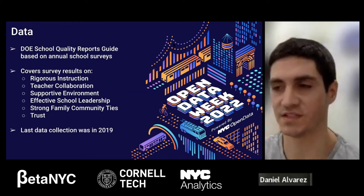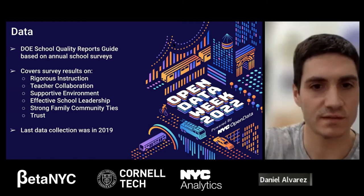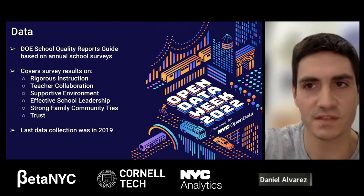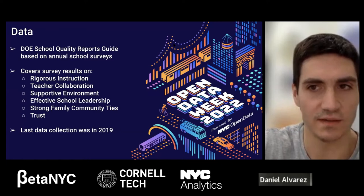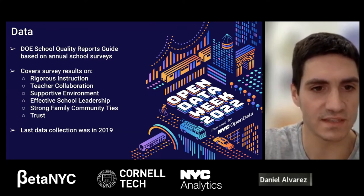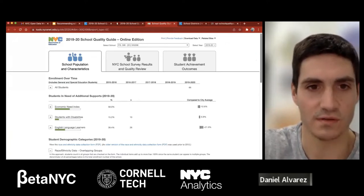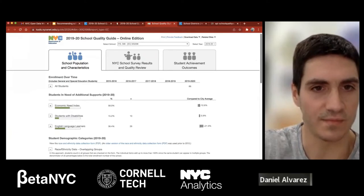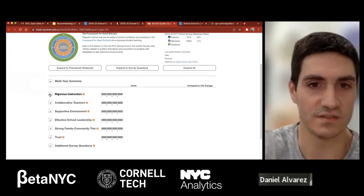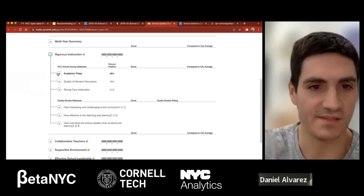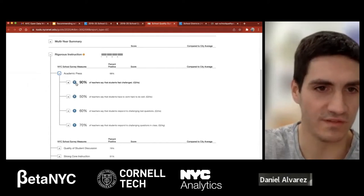Just to understand what that looks like, I'll drop to this web link to the 2019–2020 school guide. You'll see there are six high-level topical areas, each broken down into a battery of questions where survey responses were collected. For example, rigorous education includes academic press, which breaks down to the percentage of teachers saying students feel challenged or have hard work to do. I don't have enough time to go through every question, but this was extremely helpful for the evaluation process.